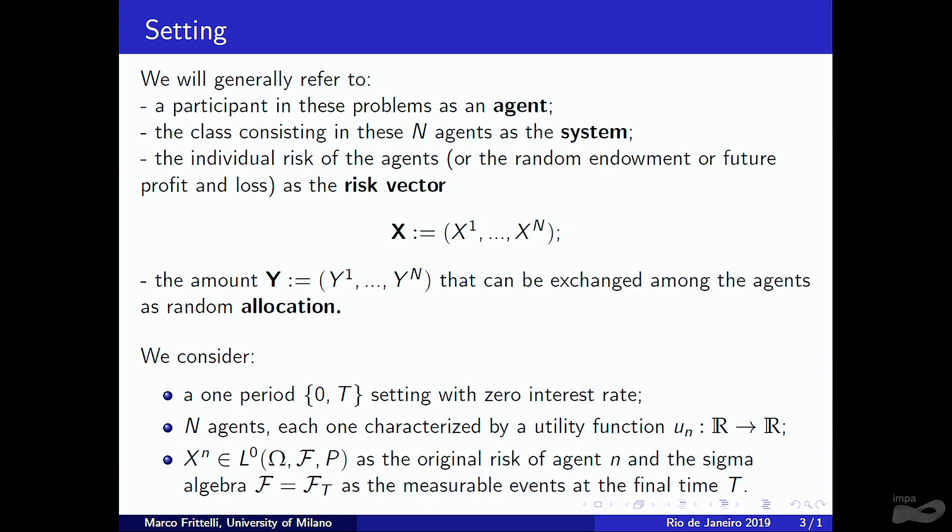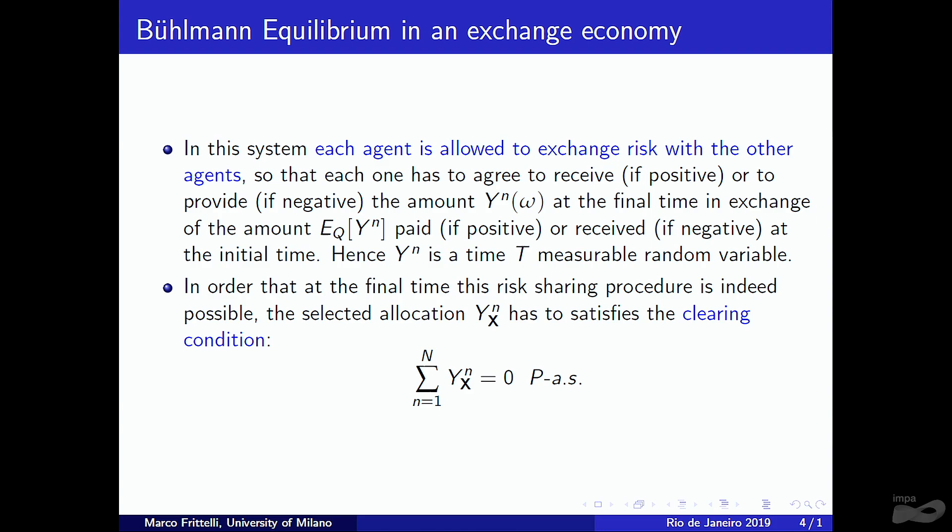Xₙ is a random variable, a measurable function at the final time with respect to a given sigma-algebra. In a risk exchange equilibrium, agents are allowed to exchange risk, receiving or providing Yₙ depending on the final event, while paying or receiving a cost for Yₙ. The pricing measure Q is part of the solution.